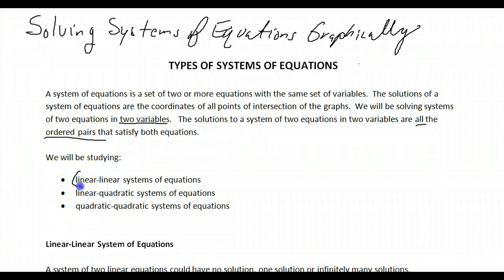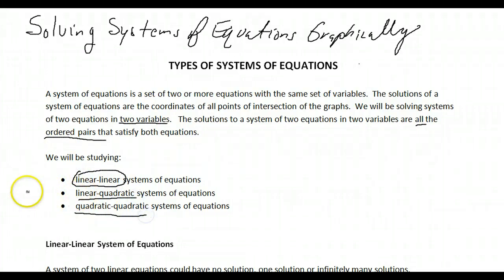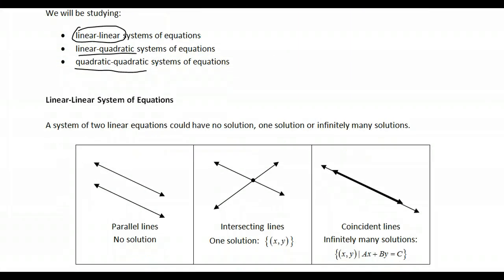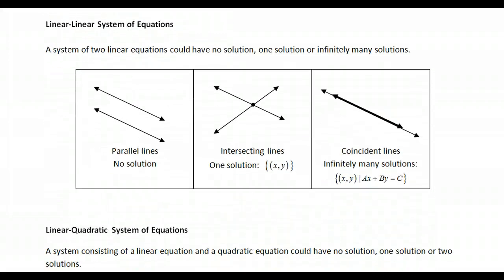We're going to be studying linear-linear, linear-quadratic, and quadratic-quadratic systems of equations. So let's take a look at what each of those are. Linear-linear systems: a system of two linear equations — two lines.